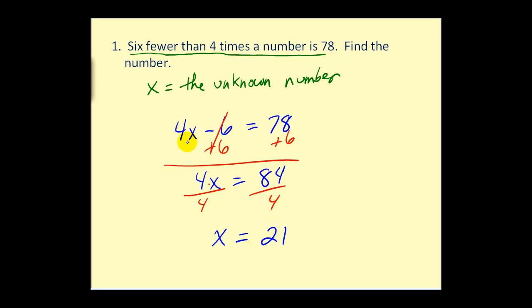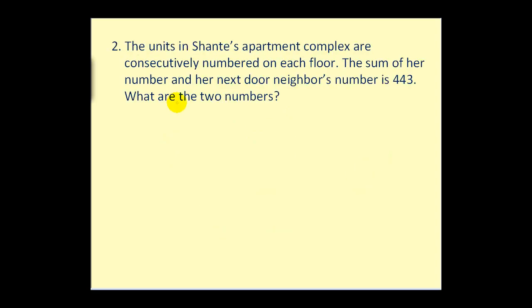And to check this, 4 times 21 would be 84 minus 6 equals 78. And that checks. Moving along. The units in Shantae's apartment complex are consecutively numbered on each floor. The sum of her number and her next door neighbor's number is 443. What are the two numbers?